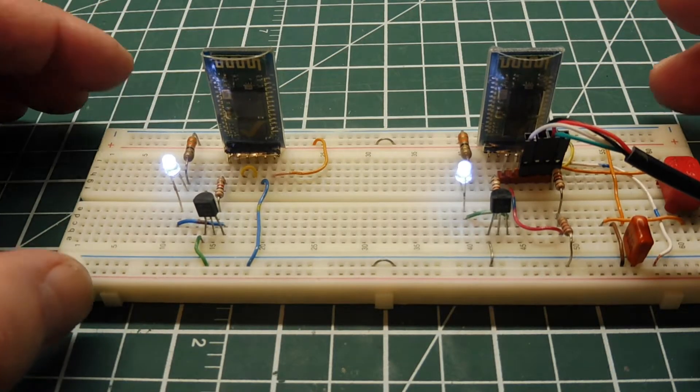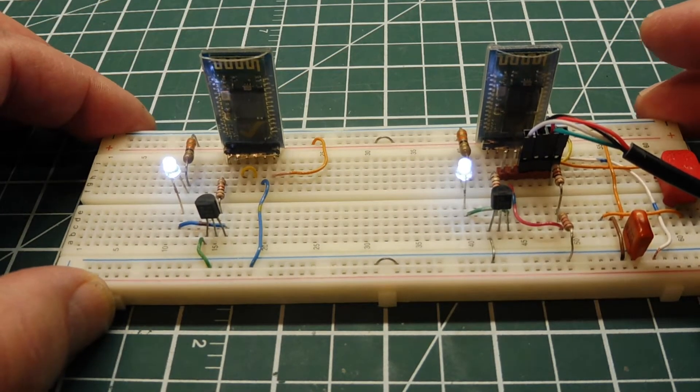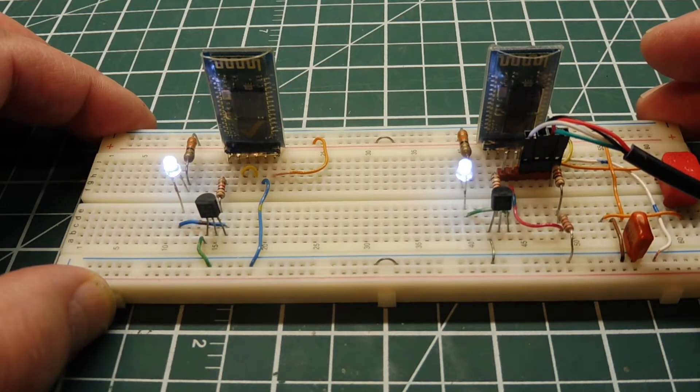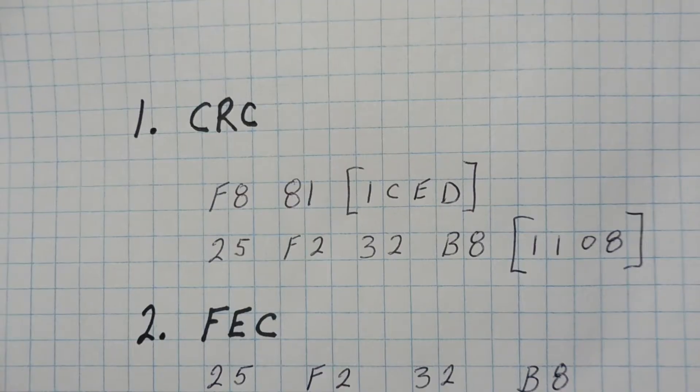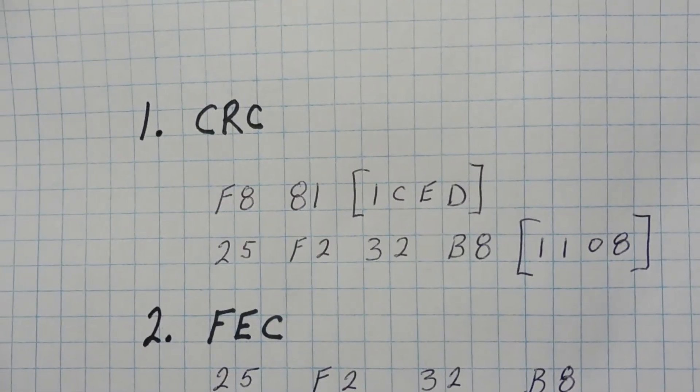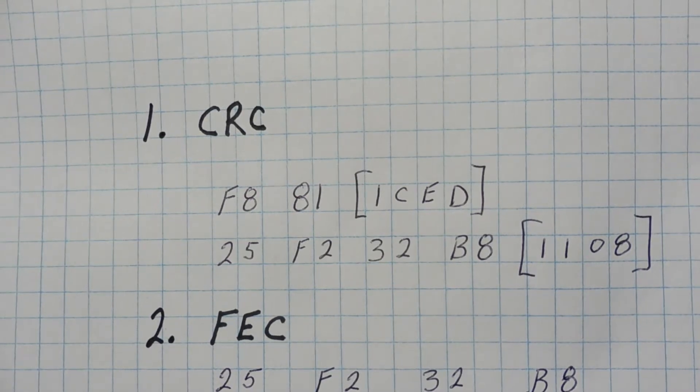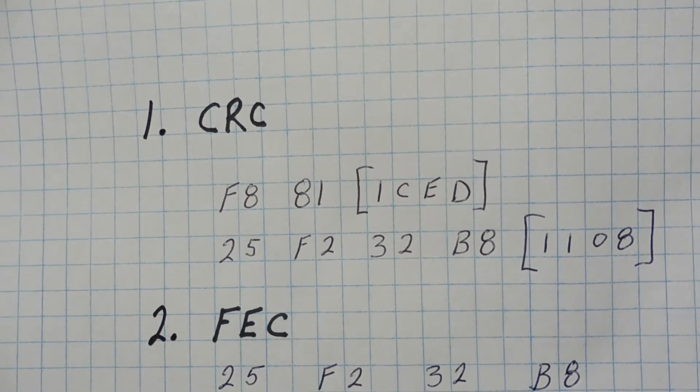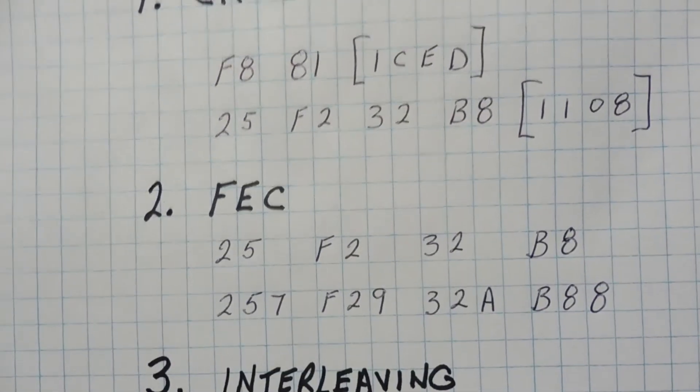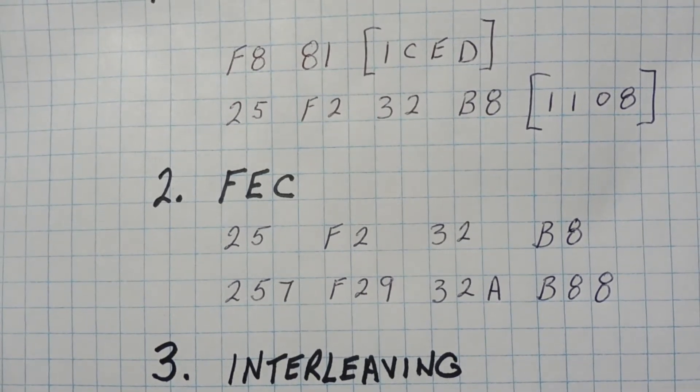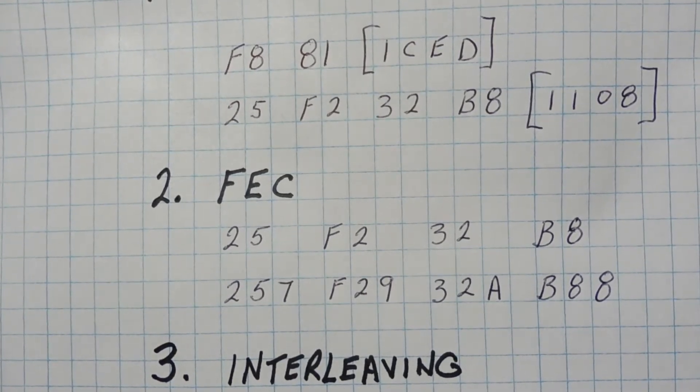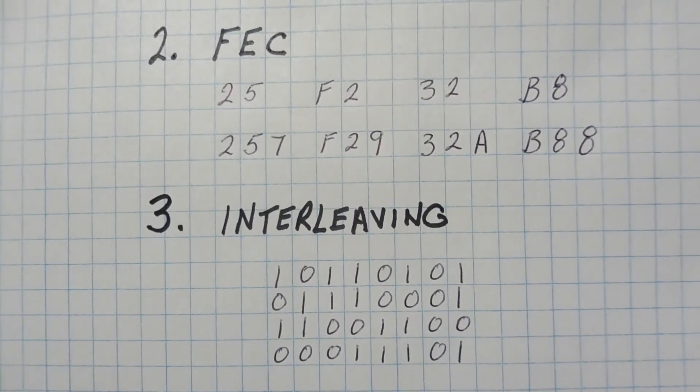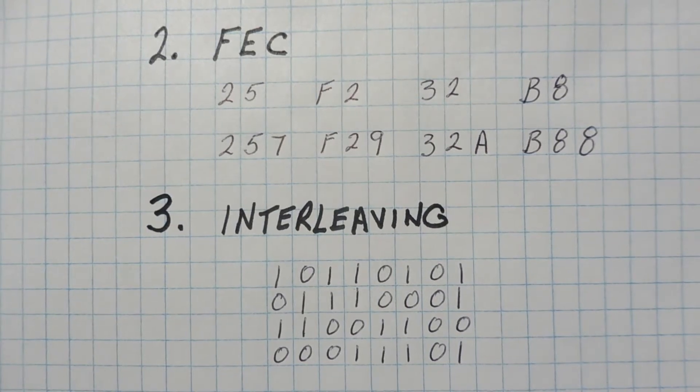So the two protocols we're going to look at in this video is data error detection which is CRC, cyclic redundancy check, and data error correction which is forward error correction, FEC. Here are the protocols. The first one is CRC for error detection. The second one is FEC for correcting single bit errors. And the third one is interleaving. Interleaving works together with FEC, and basically what it does, it spreads the data out over in the bitstream.